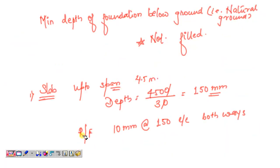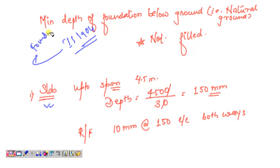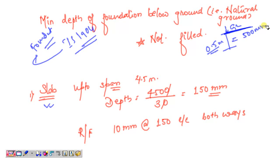As per IS 1904, which covers foundation design, the minimum depth of foundation below the natural ground level — the original or mother soil — shall be 500 mm (50 cm). This is the minimum depth criteria for foundations.